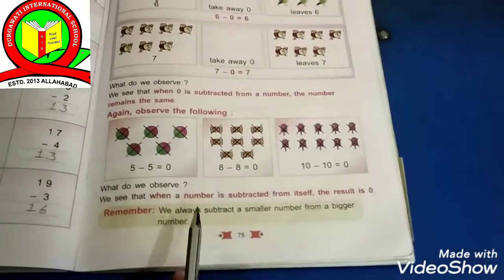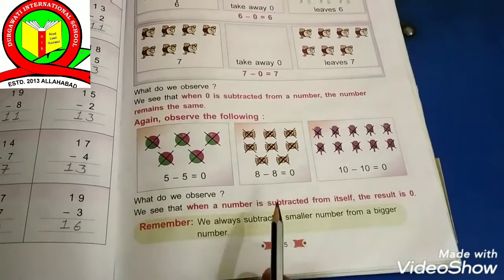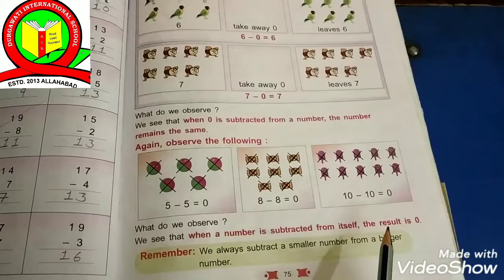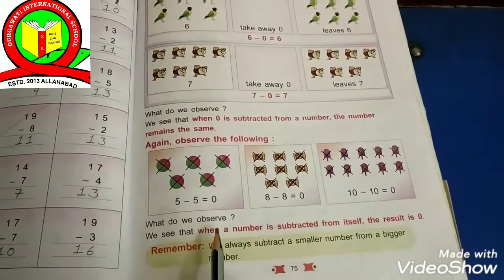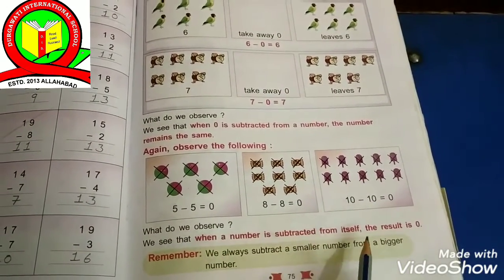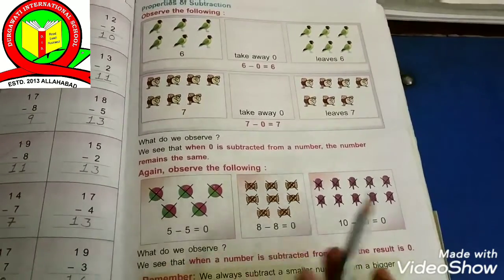So what do we observe? We see that when a number is subtracted from itself, the result is always 0.